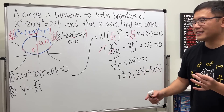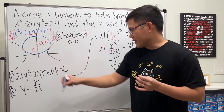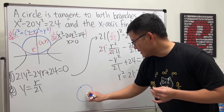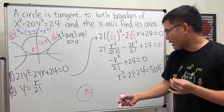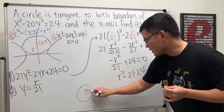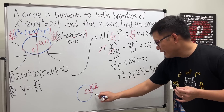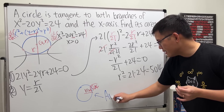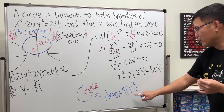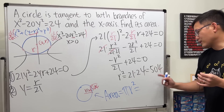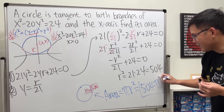Since we want the area of the circle and we've found r² = 504, the area is πr² = 504π. That's the answer for this question — really a nice result.